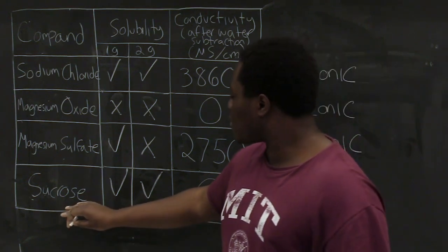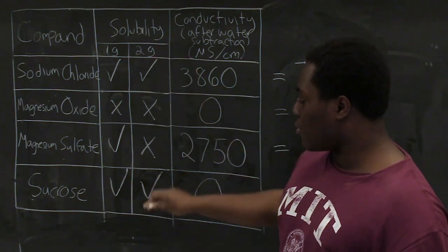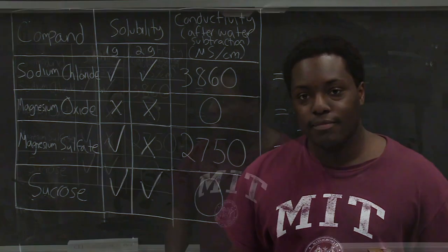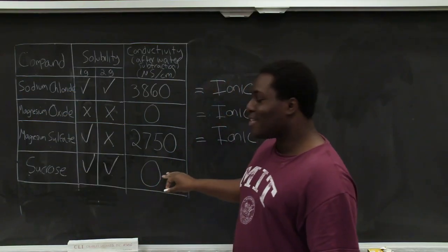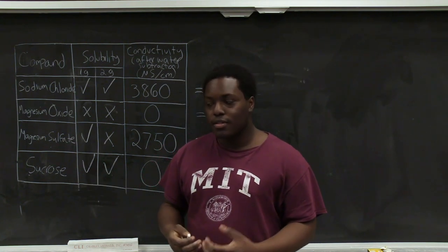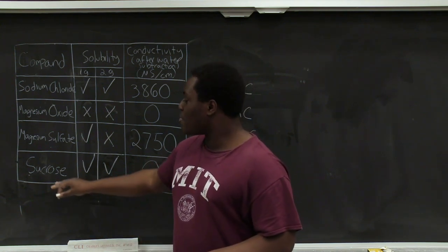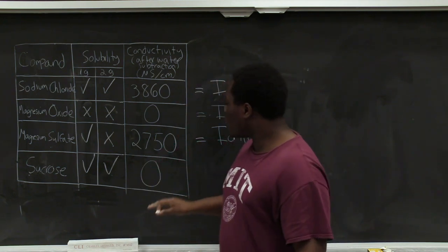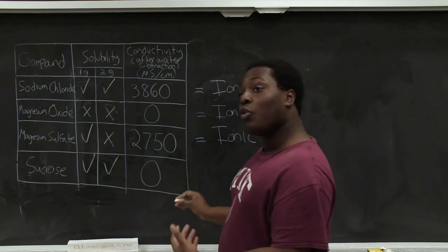Finally, if we look at sucrose, we see that both one gram and two grams of sucrose were able to dissolve in water, but we were not able to get any conductivity. This means that sucrose dissolved in water but did not dissociate into respective ions. Sucrose has a bunch of polar groups on it which make it able to dissolve in water, but it does not dissociate into ions, which is why we were not able to measure any conductivity. So sucrose is a covalent compound.